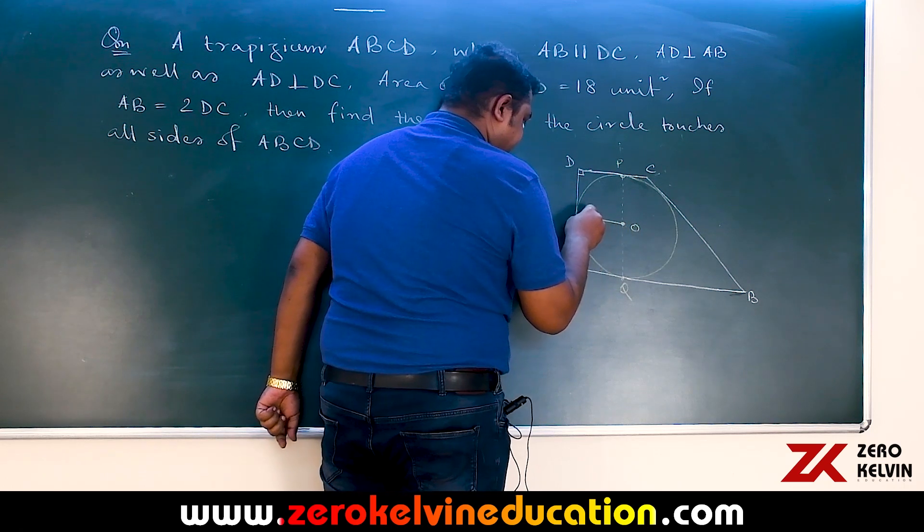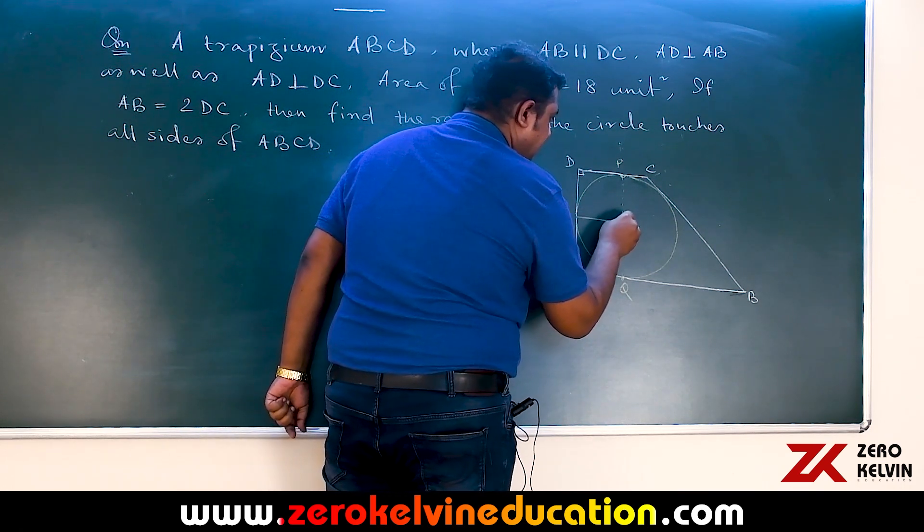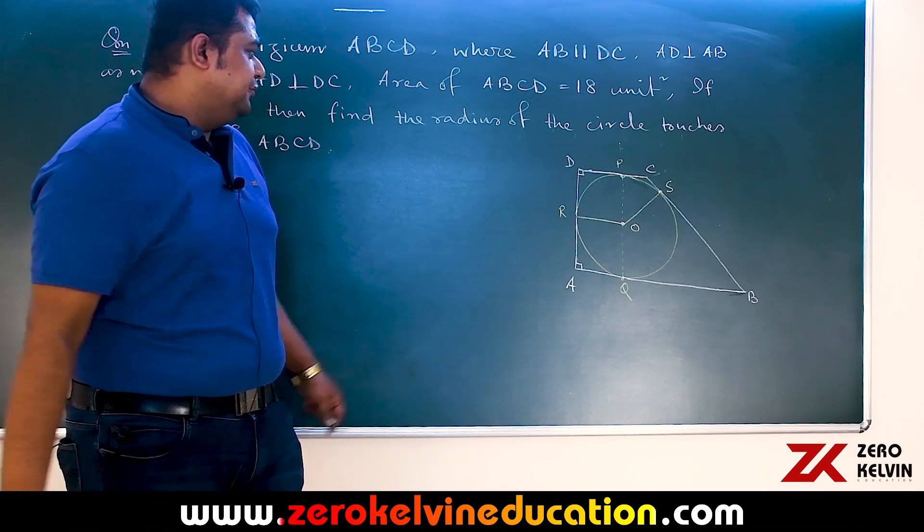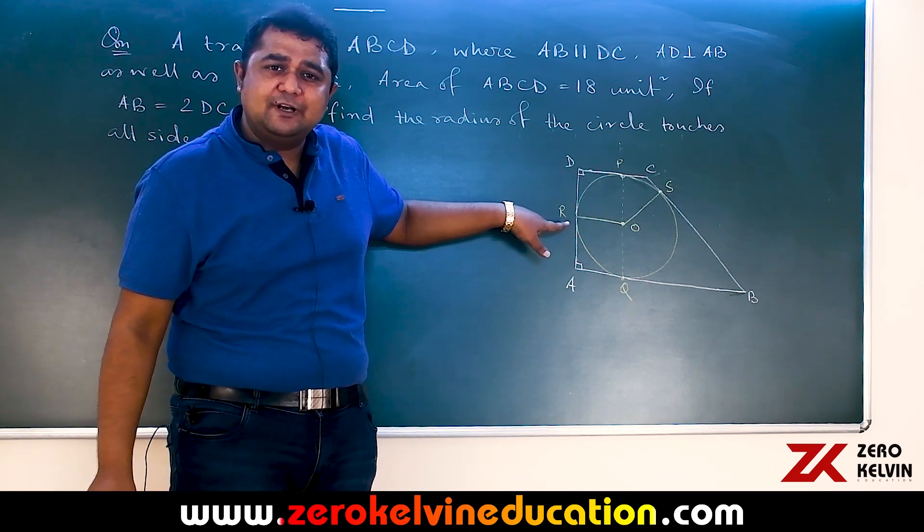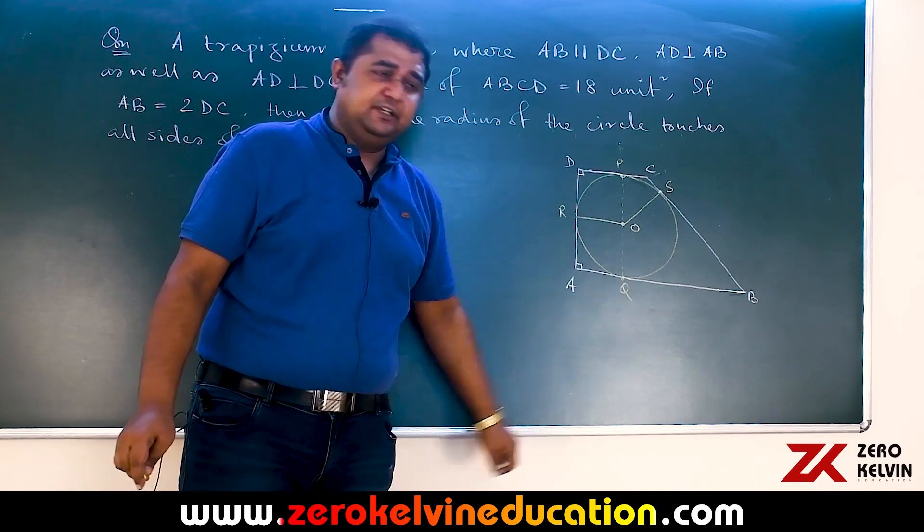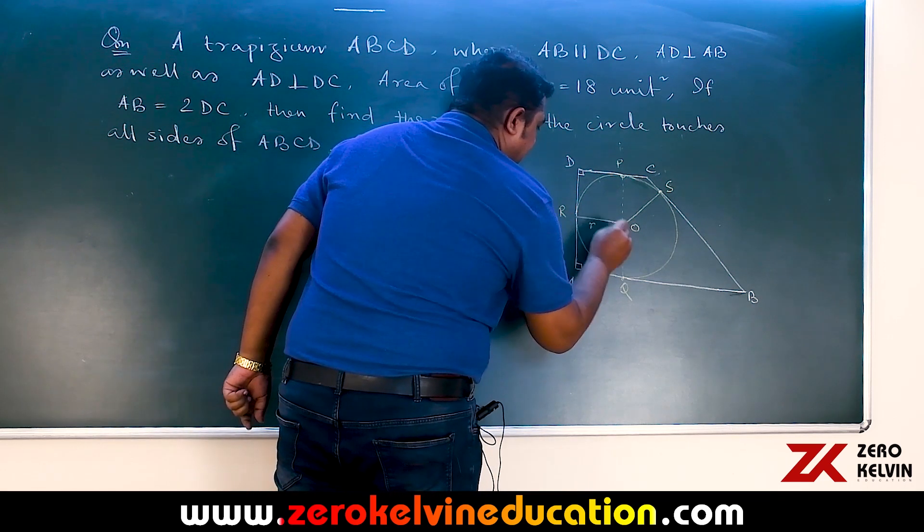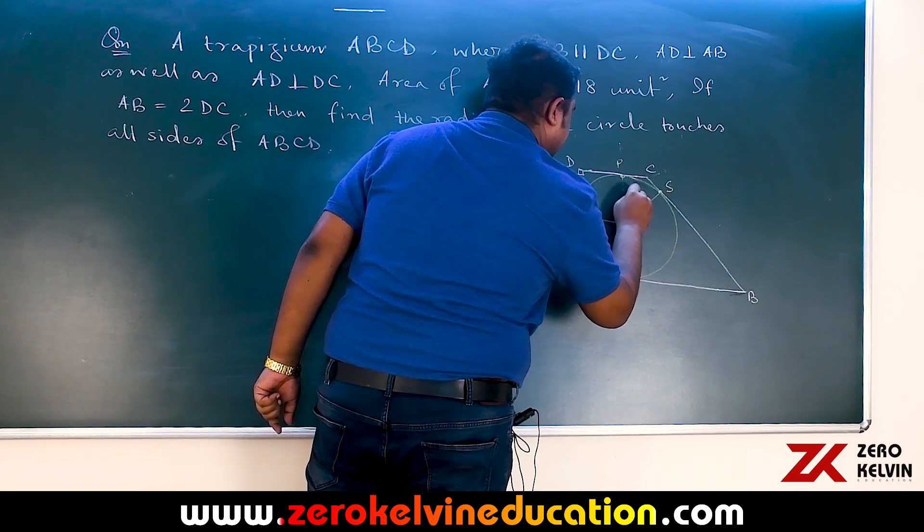Even we can have OR and OS as two radii where R and S are respectively point of contact of the circle with AD and BC. Now, if we mark all these measurements are radius for the circle.